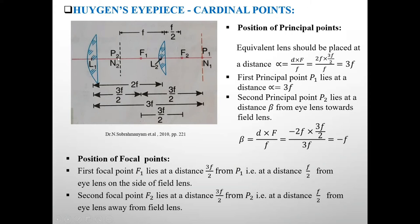Now second principal point P2 lies at a distance beta from eye lens towards field lens. So it is given by beta equals D times F upon F prime, equals minus 2F times 3F by 2 upon 3F equals minus F.